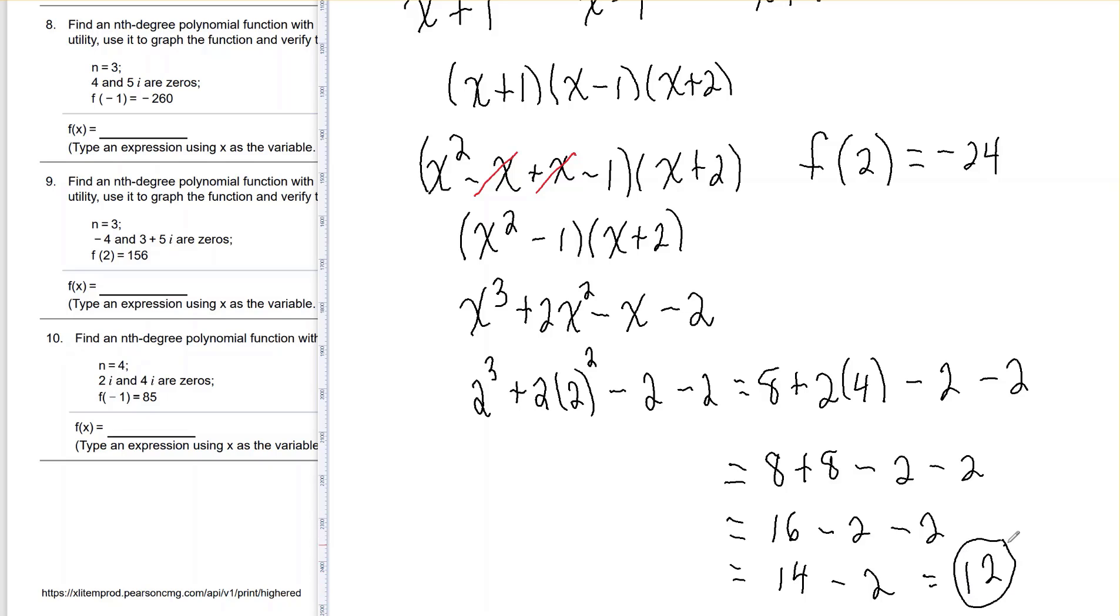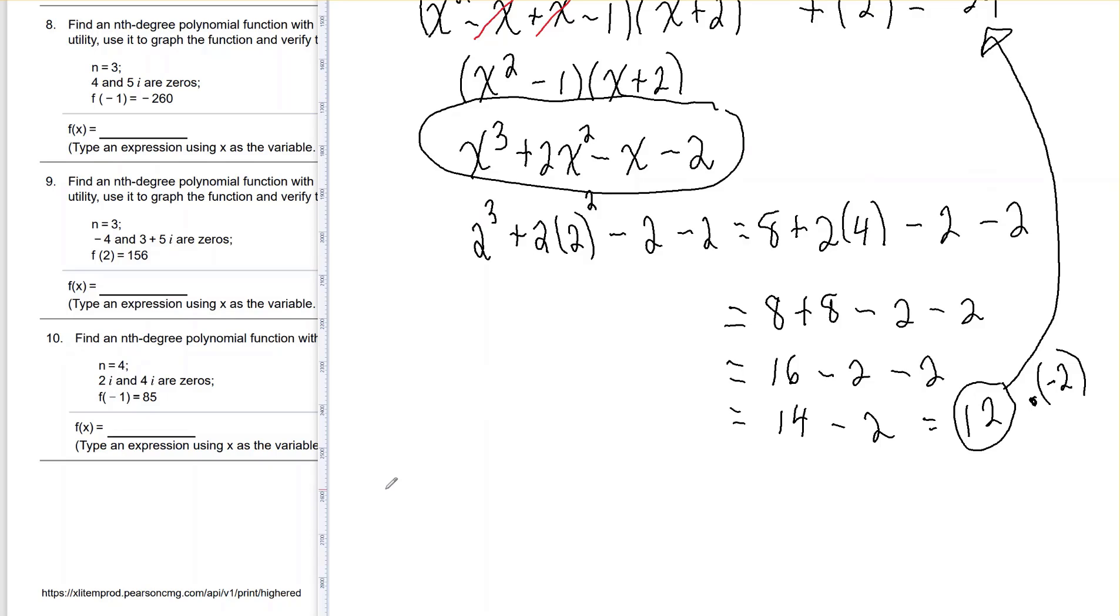Now I was supposed to get negative 24. So what that means is to get a negative 24 from a 12, I have to multiply it times a negative 2.